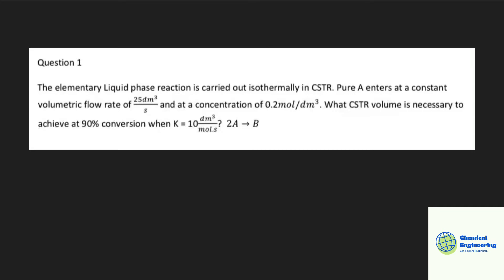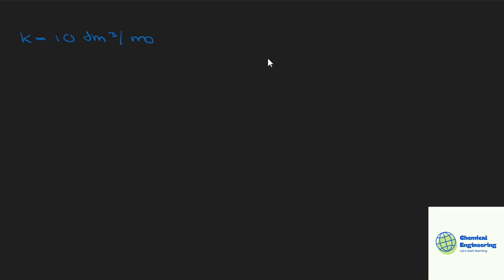So we are given k, we are given the volumetric flow rate, we are given the conversion, and we are given the initial concentration.